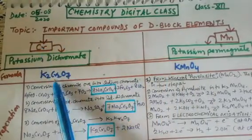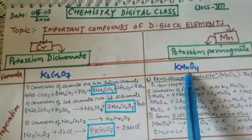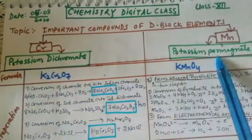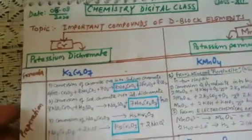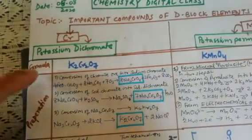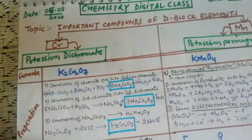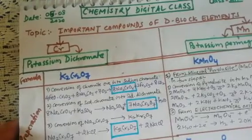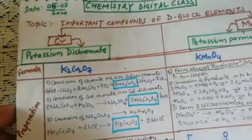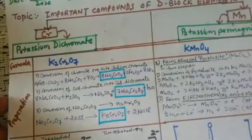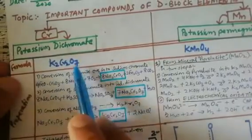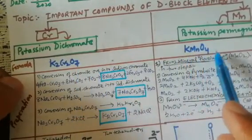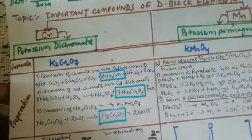We are studying the chromium compound and the manganese compound. For potassium dichromate and potassium permanganate, we need to cover formula, preparation, structure, properties, and uses. The basic formula of potassium dichromate is K₂Cr₂O₇, and potassium permanganate is KMnO₄.